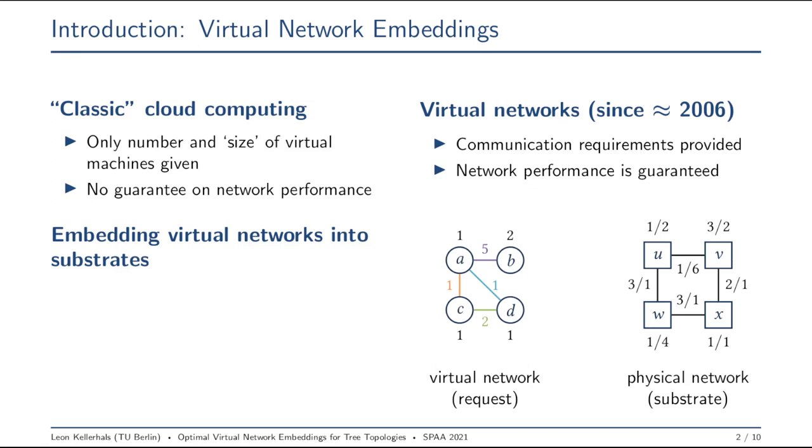Here I have a physical network with four machines, one, two, three, four, and also some interconnections or edges, and each of these have some capacities and some cost.